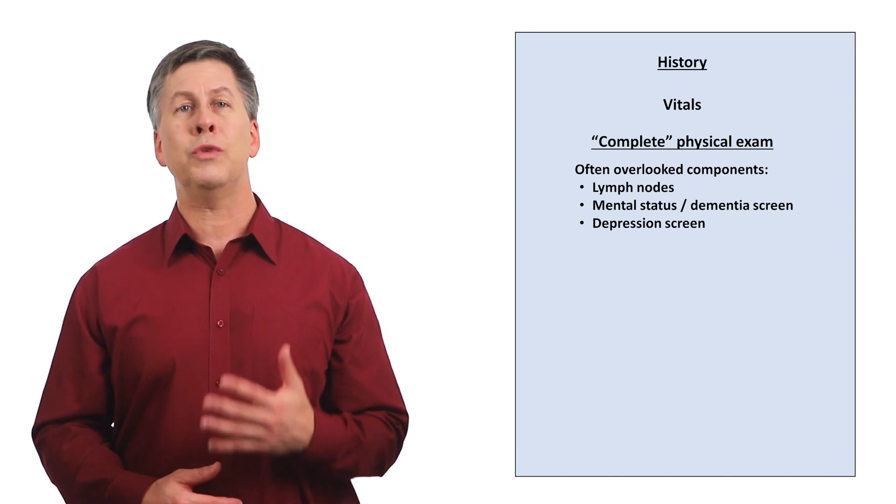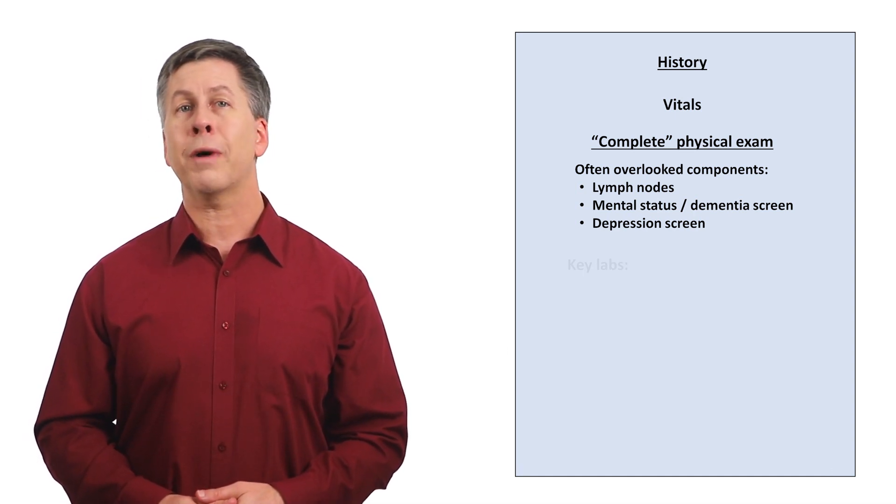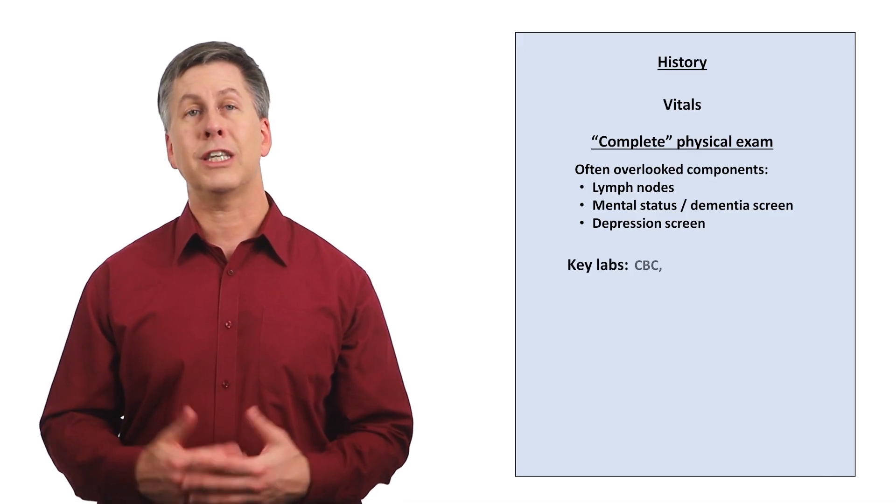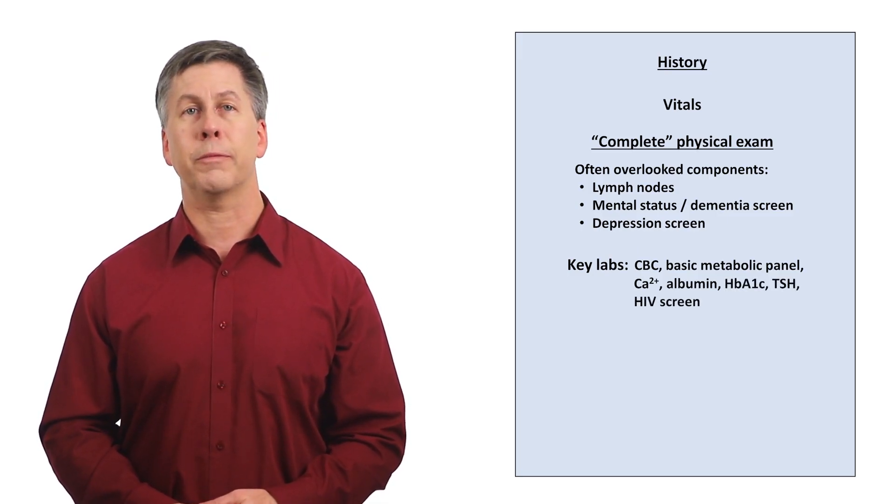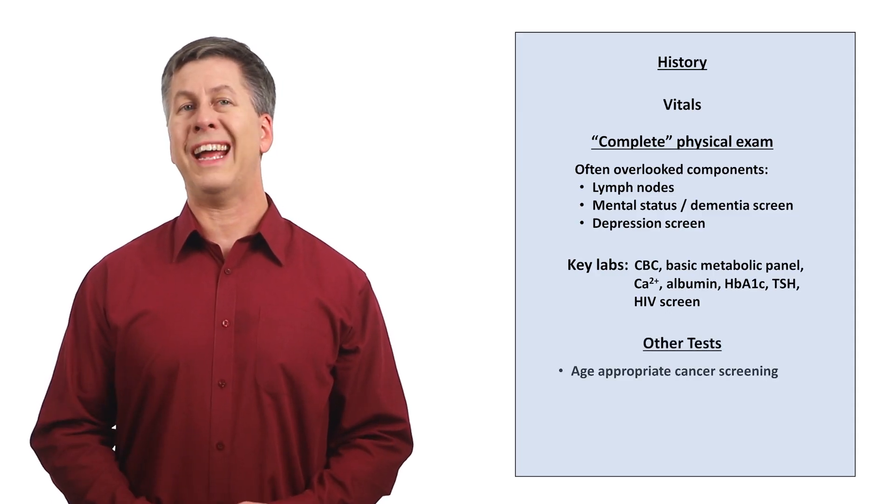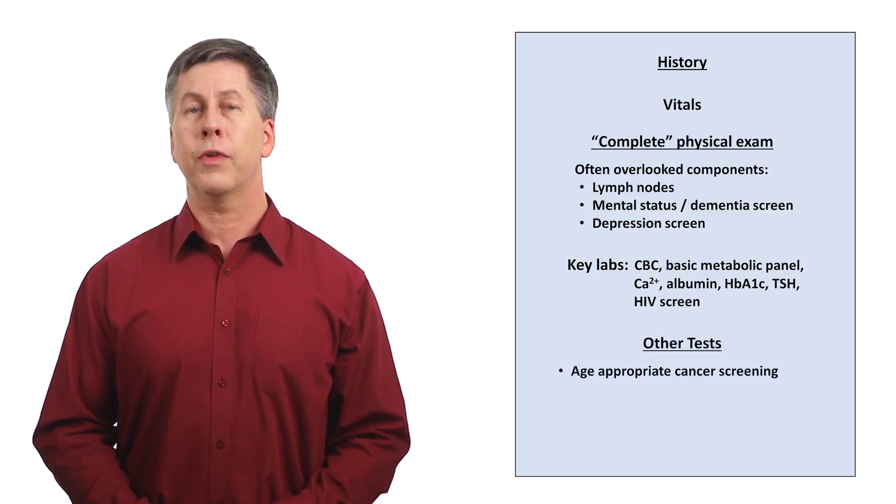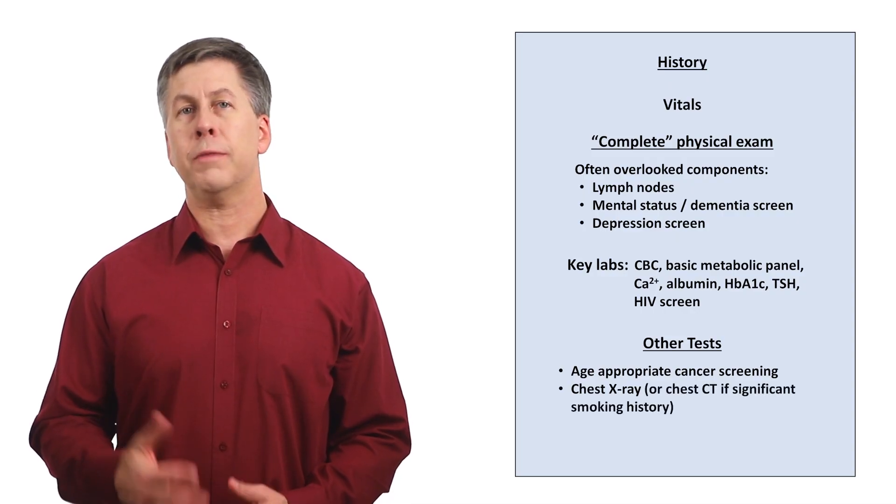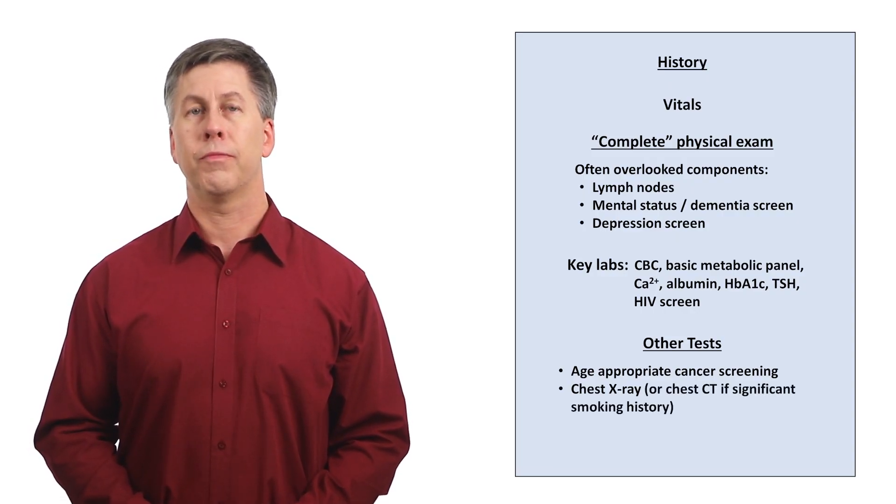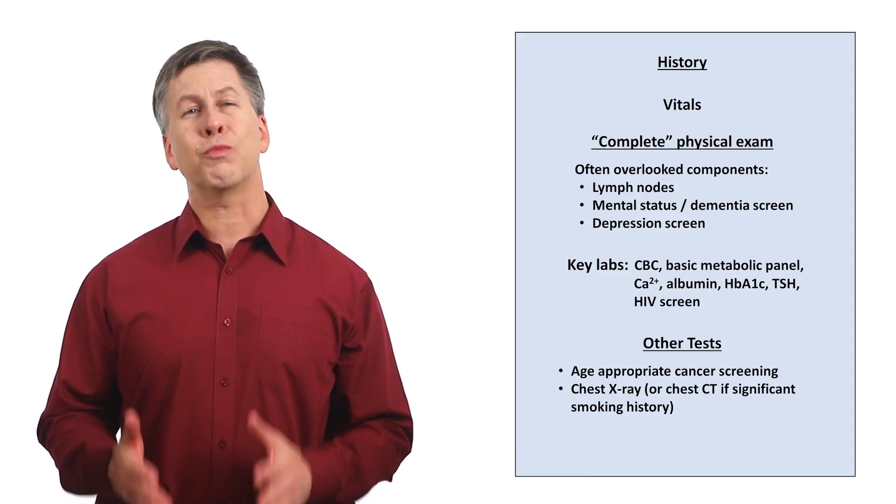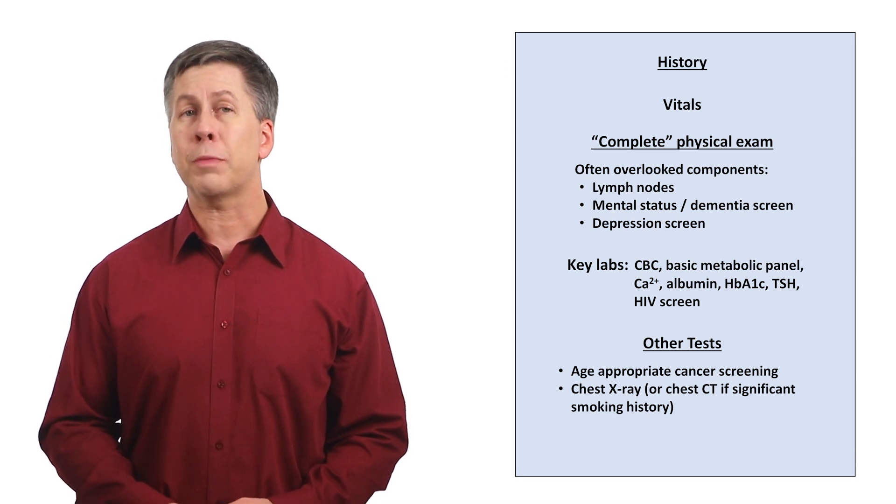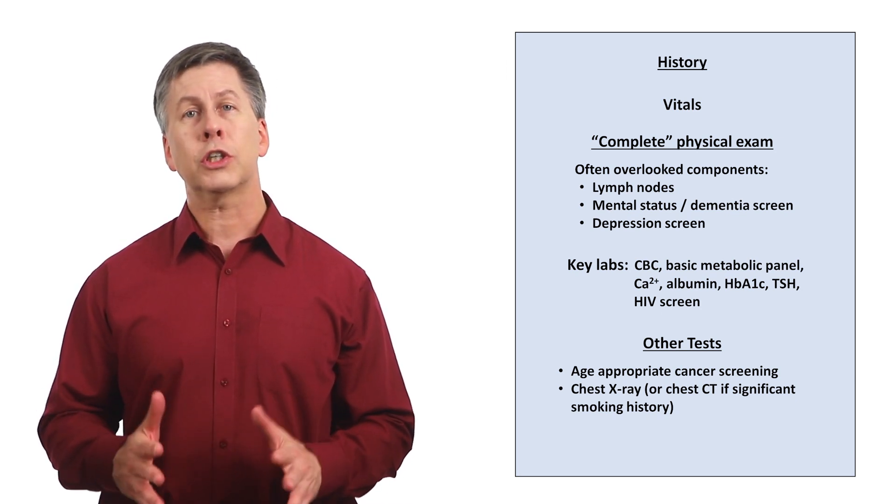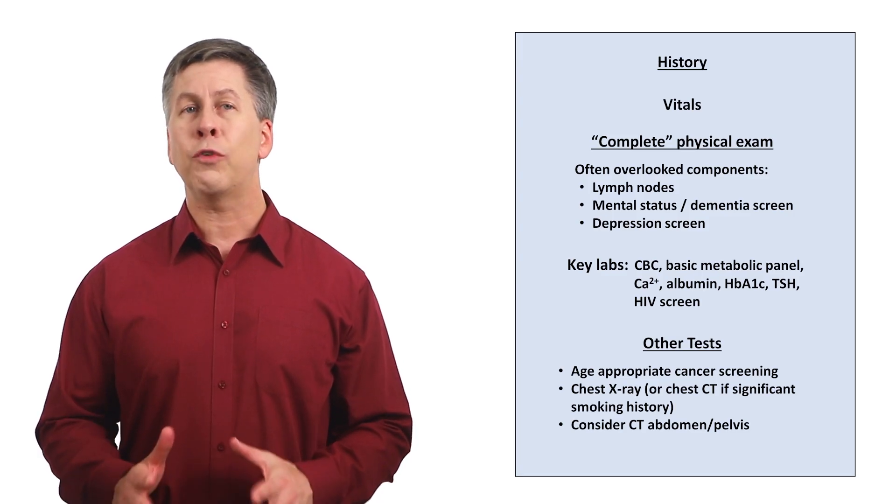If the history and exam do not point to a specific cause, they should be followed by some key labs, including a CBC, basic metabolic panel, calcium, albumin, hemoglobin A1c, TSH, and an HIV screen. Other tests to consider include age-appropriate cancer screening and a chest x-ray or a chest CT if the patient has a significant smoking history. Although I think the yield is relatively low in the absence of a symptom, exam, or lab finding pointing specifically towards intra-abdominal pathology, some clinicians will order a CT abdomen and pelvis for everyone at this point.